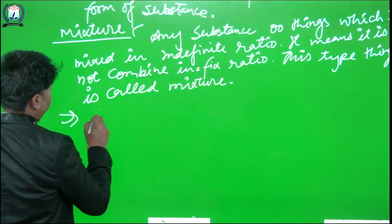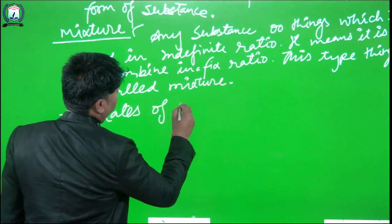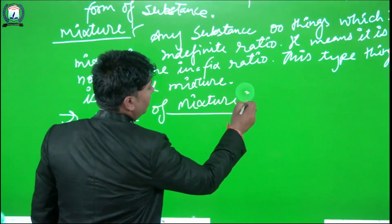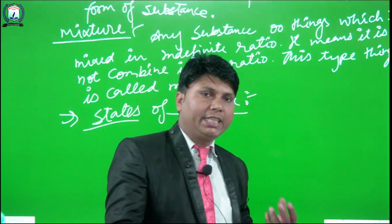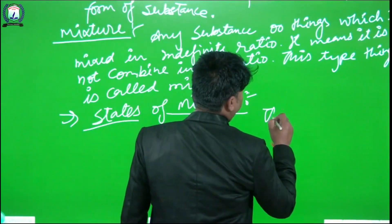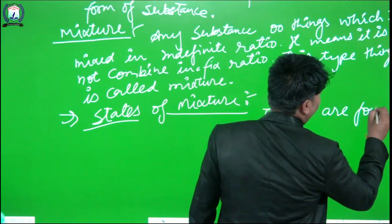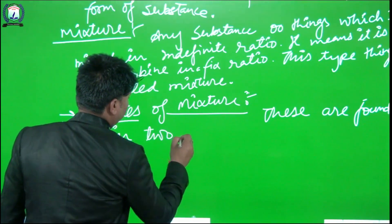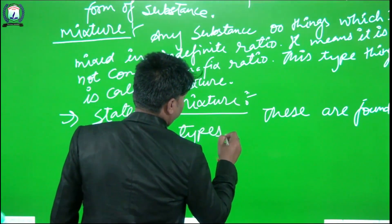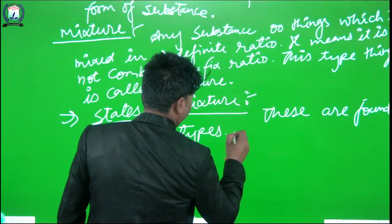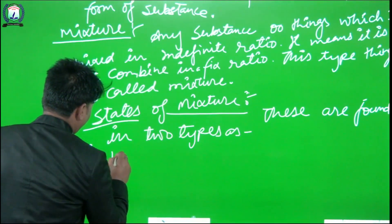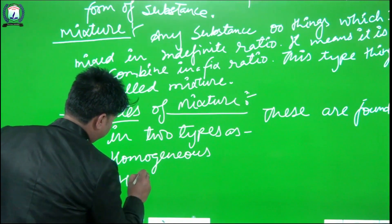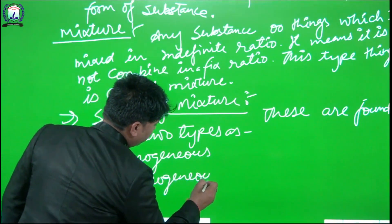Now we discuss the types of mixture. How many types of mixture are there? Mixtures are found in two types: first, homogeneous, and second, heterogeneous.